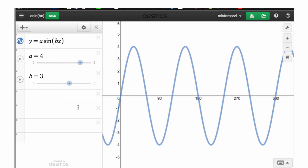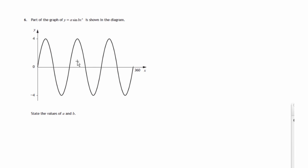So we can see from that animation that A, the amplitude, is 4. And B, the number of cycles that you get between 0 and 360, is 3.